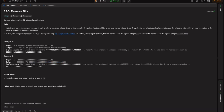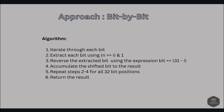One constraint is that the input number must be a binary string of length 32. Now let's look at the approach: the bit-by-bit approach. This involves iterating through each bit of the input number, extracting each bit at each position, and placing it in the corresponding reverse position of the result — which is essentially that mirror reflection.